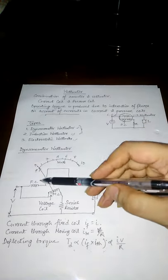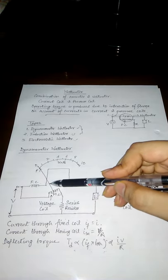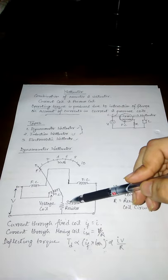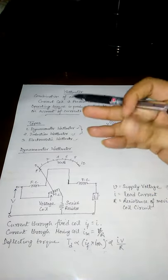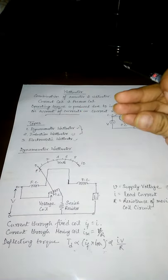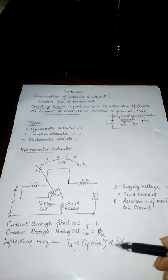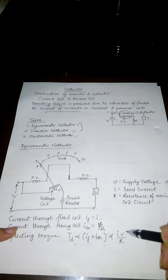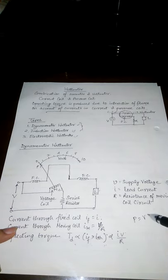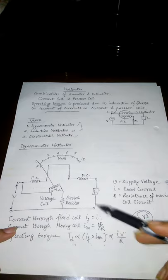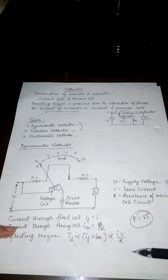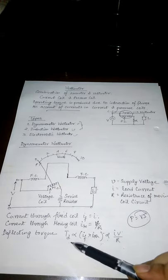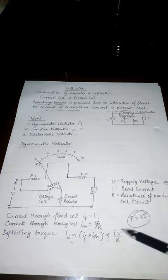The fixed coil current is proportional to the load current and the moving coil current is proportional to the load voltage, so the Wattmeter gives the power value directly. The deflecting torque Td ∝ IF × IM = I × V/R = IV/R. Since P = VI and R is constant, the deflecting torque is directly proportional to power.